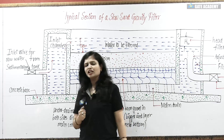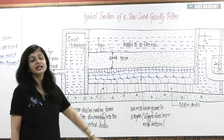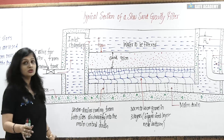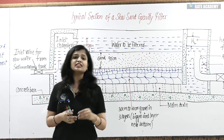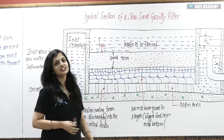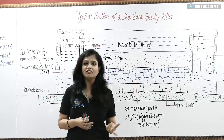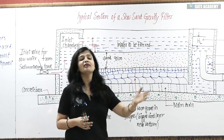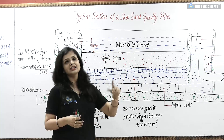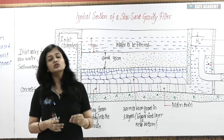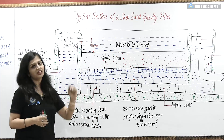The bacteria removal efficiencies are high, but the drawback is that the area required is 100 to 2000 meters square — you can think about how much area is needed to set up slow sand gravity filters. The rate of water supply per hour per meter square area is less than 30 times compared to rapid sand gravity filters. If you need to supply a large quantity of water and don't have the large land area required, we don't use slow sand gravity filters.